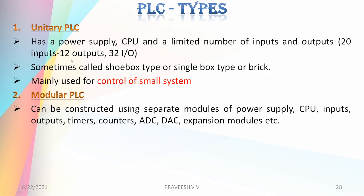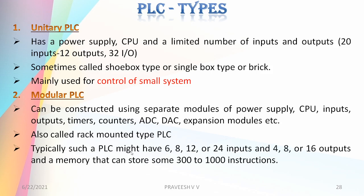In the unitary PLC, everything is fixed and there are not many additional components or modules available. Modular PLCs are also called rack-mounted type PLCs — you can add or remove modules from the rack. Typically such PLCs might have 6, 8, 12, or 24 inputs and normally 4, 8, or 16 outputs, and a memory that can store around 300 to 1000 instructions and more.